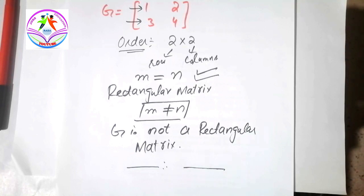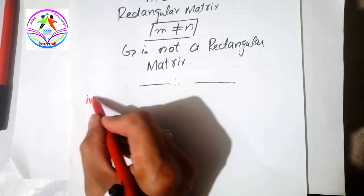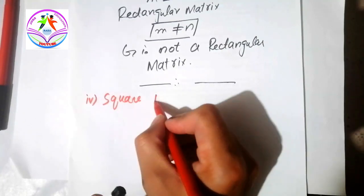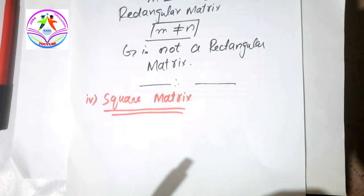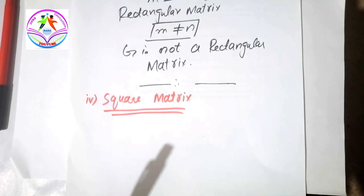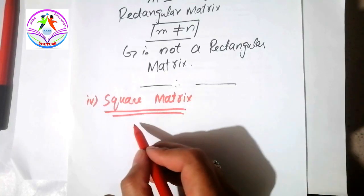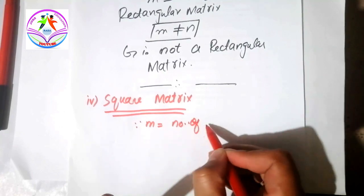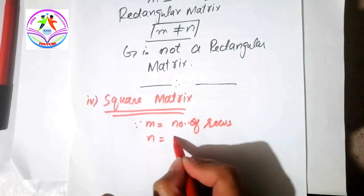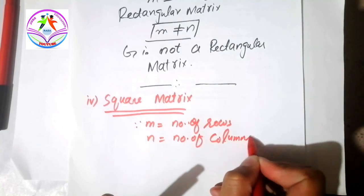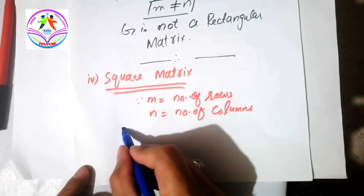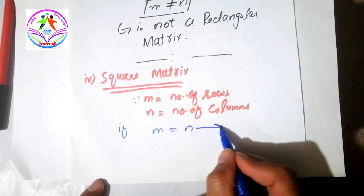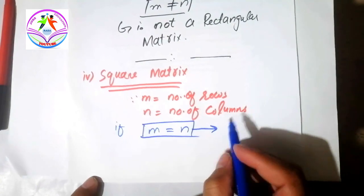Now let's move to another type of matrix. The matrix whose number of columns and rows are equal to each other is called a square matrix. If m equals the number of rows and n equals the number of columns, then according to the square matrix condition, if m is equal to n, we call it a square matrix.